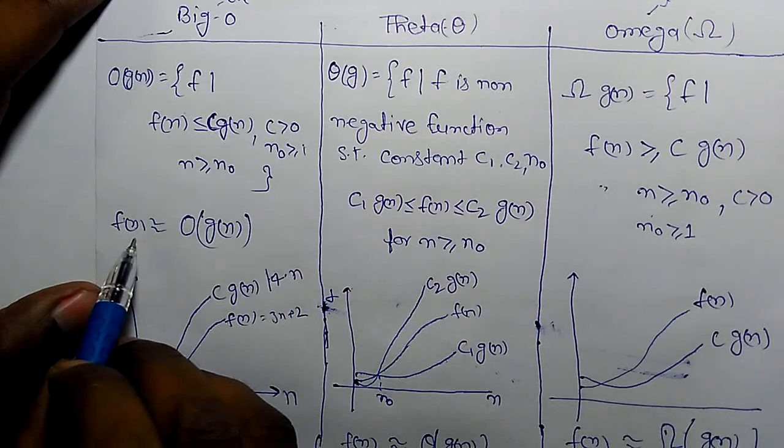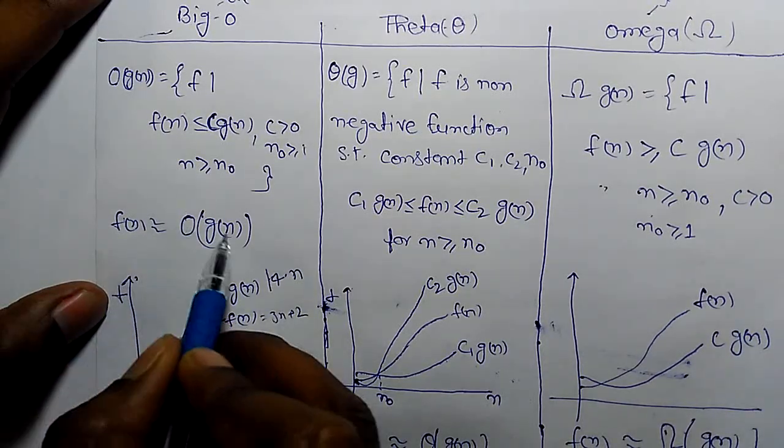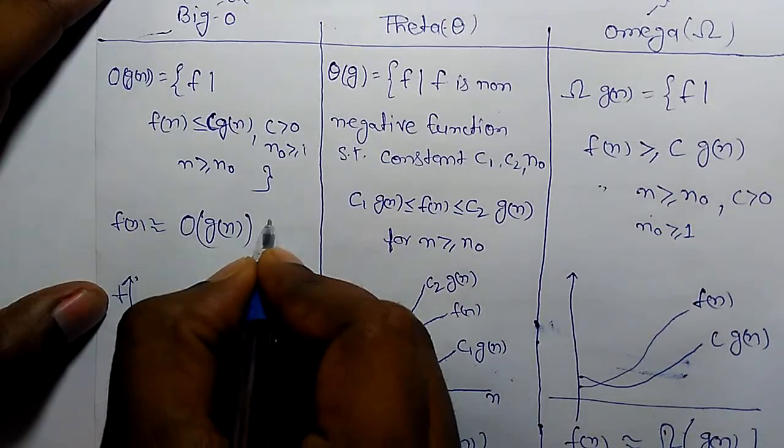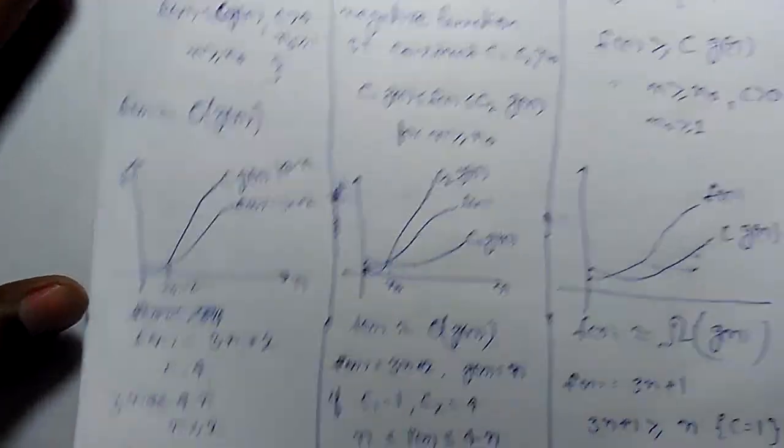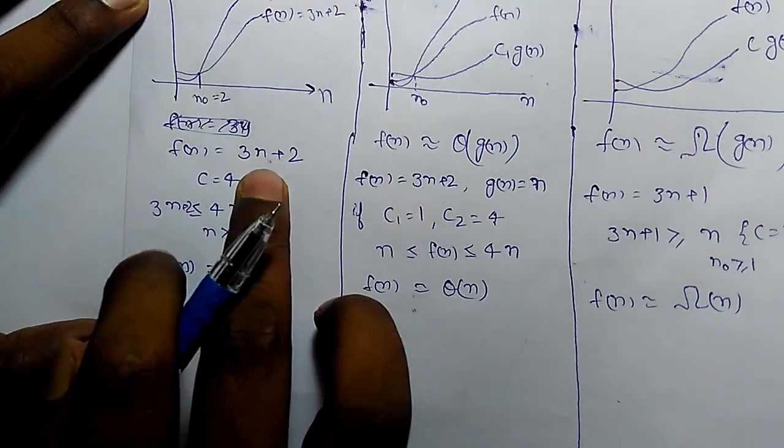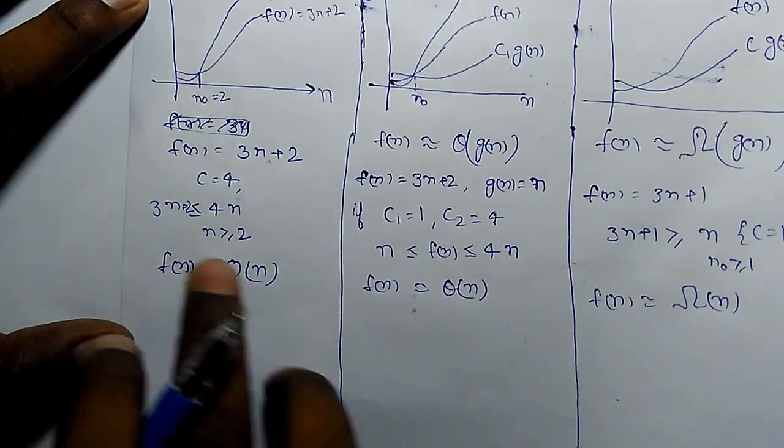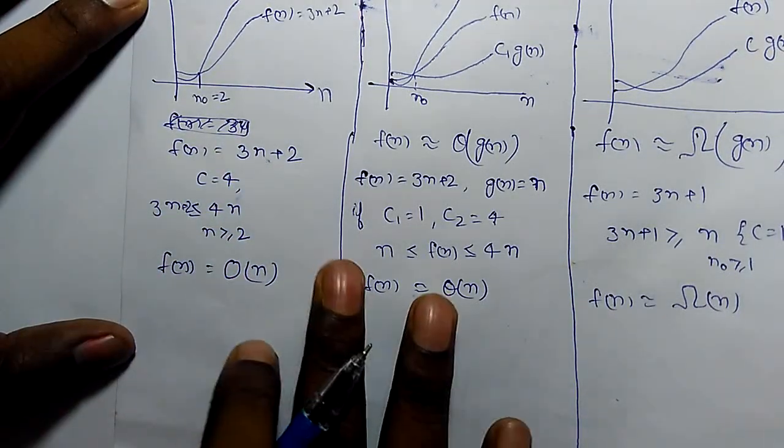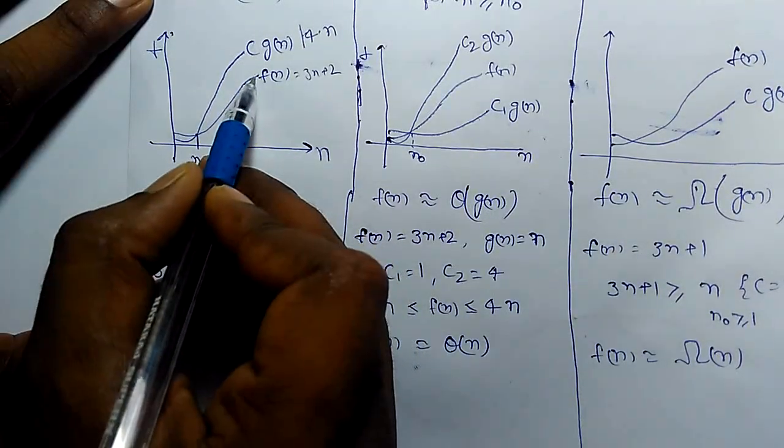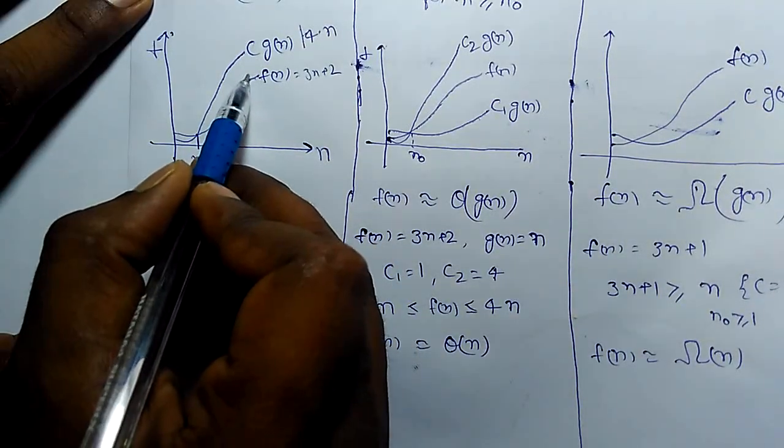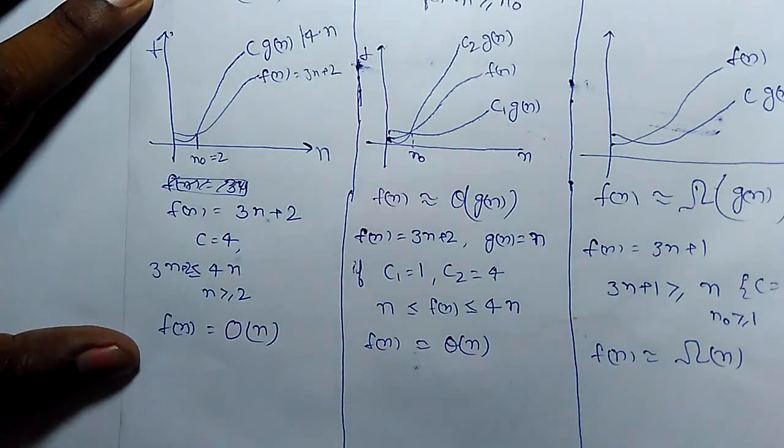So its complexity would be Big O of G of N, that is Big O of N. For F of N equals 3N plus 2, we have taken it is Big O of N. We have taken least upper bound value which is closest to F of N. It is upper bounded.